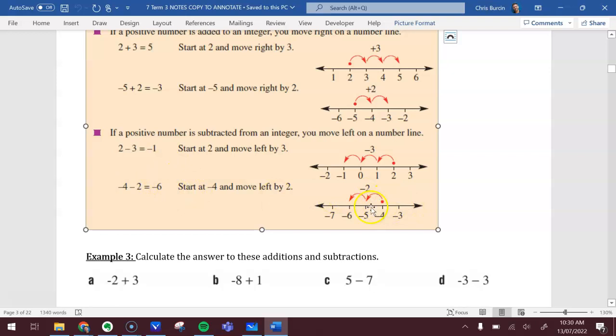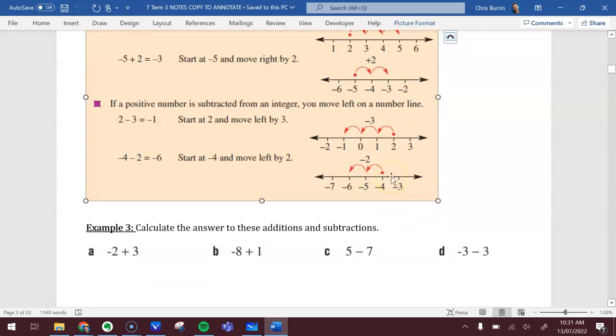Starting at negative 4, again, our number line doesn't have to start on 0 or have 0 even in it. Negative 4 minus 2, minus means left. So start at negative 4 and take away a further 2. Another way to think about it is, you owe somebody $4, and then you borrow another $2, and so now you owe them $6.